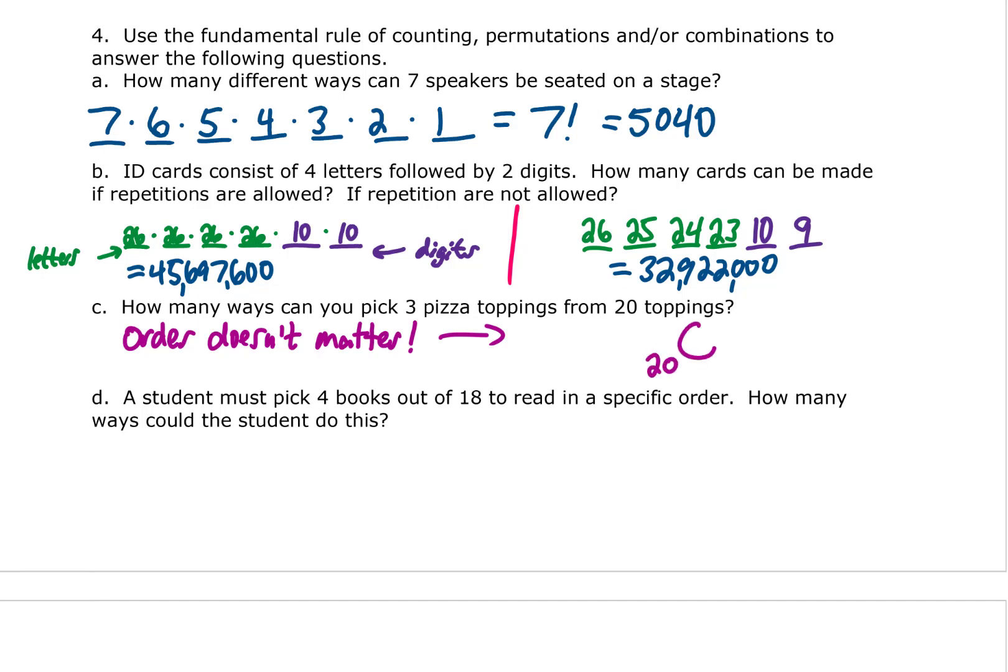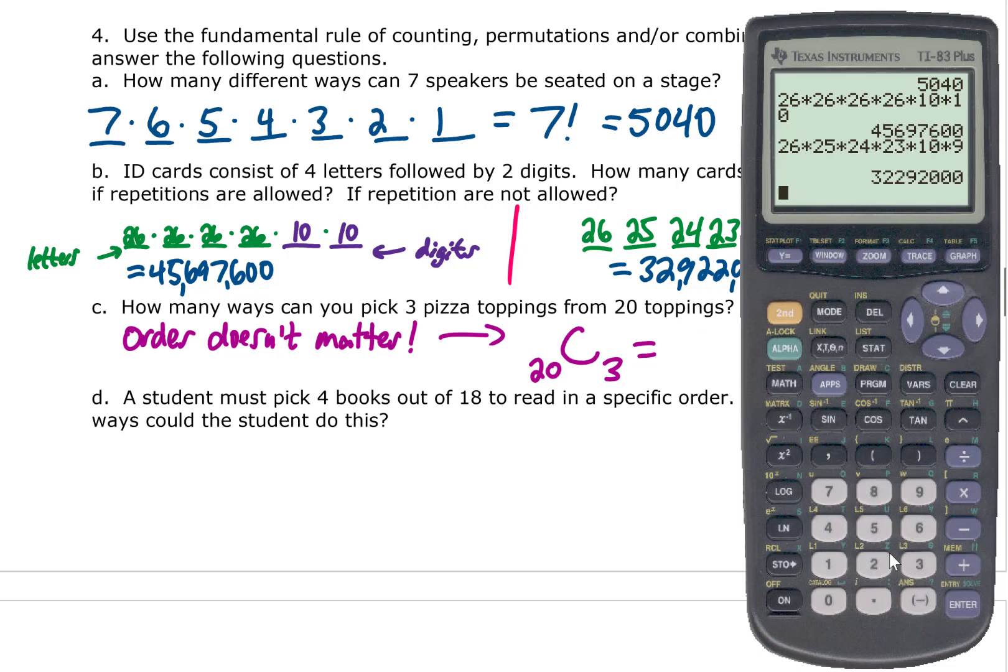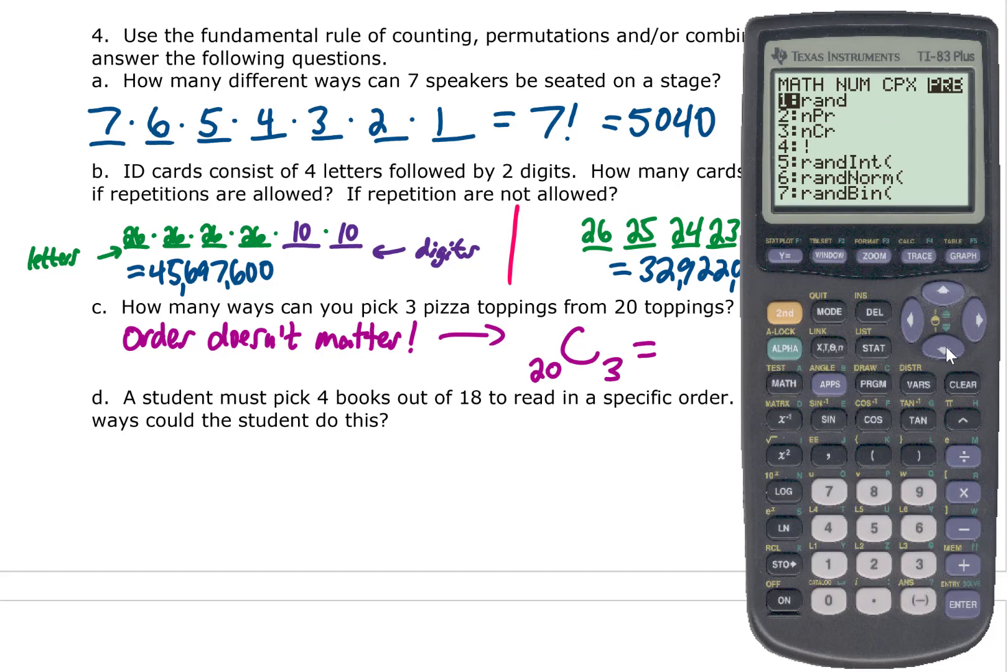We have 20 toppings total that we can choose from and we are going to choose three. The way that we type this into the calculator is we put the 20 in first, go to math, arrow over to the probability section, and choose the combination option which is the third option. This is now 20C3, and that is going to give us 1140 possible pizzas you can make.